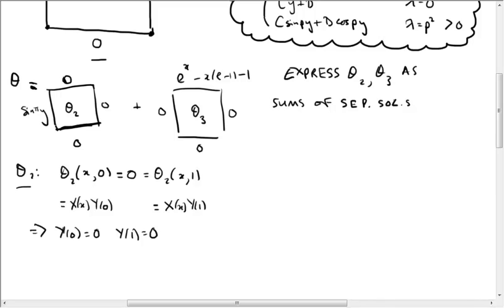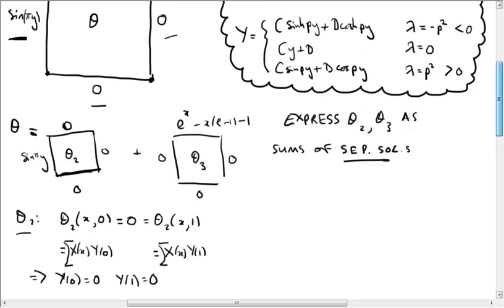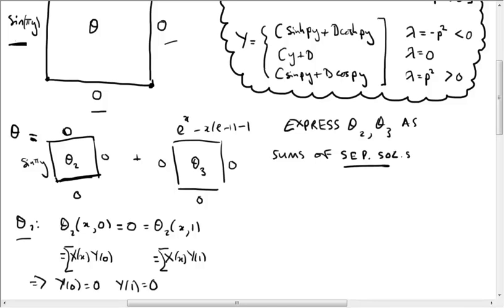Actually, we want theta 2 to be a sum of separated solutions, not just one. But if we put a sum here, this is still going to imply that all of the Y(0)s vanish at 0, and similarly at 1. So when does a separated solution vanish at 0 and at 1? Well, a linear plus a constant, the graph of that looks like cy + d, and that's clearly only going to vanish at one point, or possibly everywhere if c and d are both 0. But we don't want that trivial solution, so this is no good.